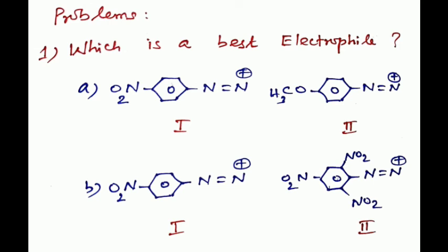The NO₂ group makes it about a thousand times faster than the methoxy group. In another comparison, the first compound is para-nitrobenzene diazonium ion and the second is 2,4,6-trinitrobenzene diazonium ion. Structure two is the best electrophile because it contains three nitro groups — more electron-withdrawing groups — and it couples easily with mesitylene and naphthalene compounds.